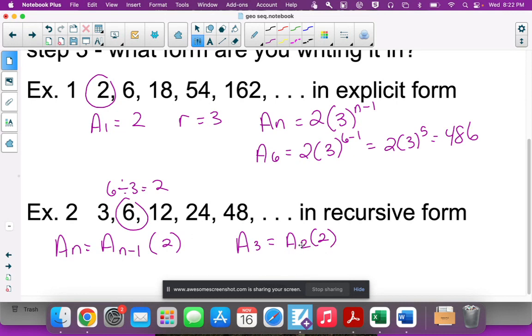What if I wanted the sixth term? I would have to take the fifth term and multiply it by 2. The fifth term is 48, so A_6 would equal 48 times 2, which is 96. You actually have to build on a recursive form - you have to keep going up in the pattern.